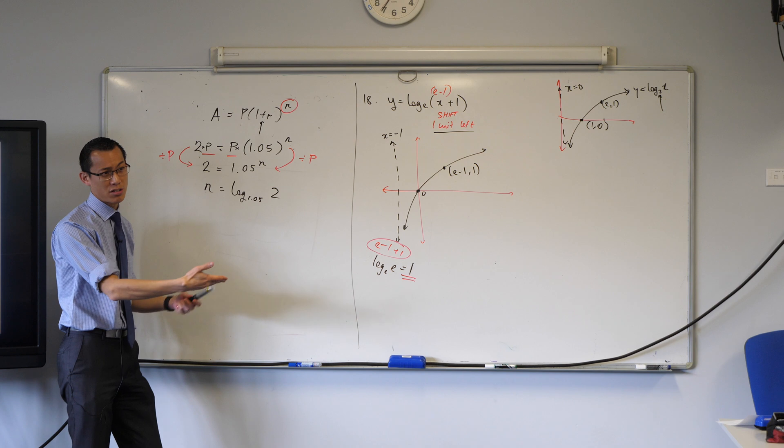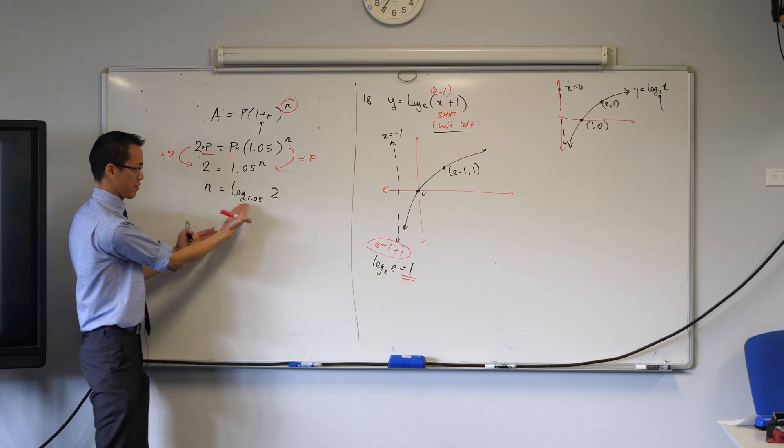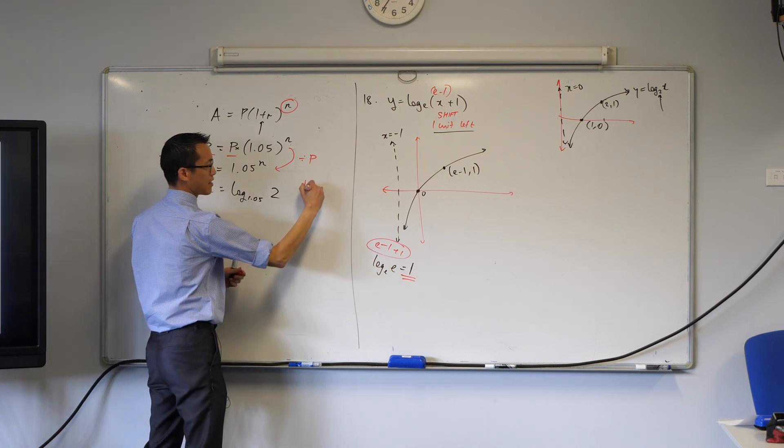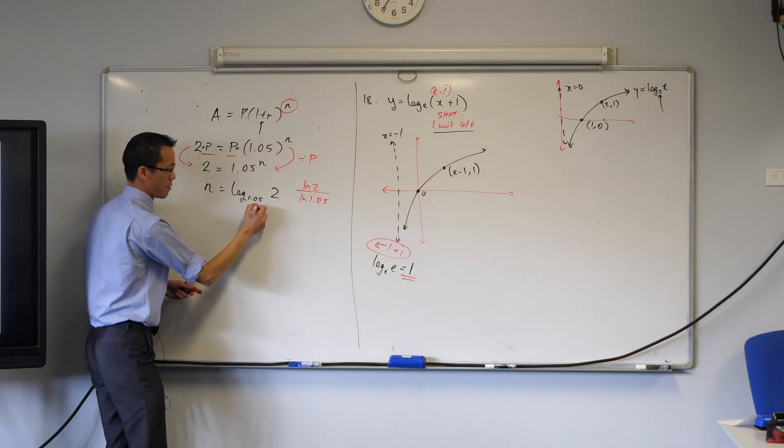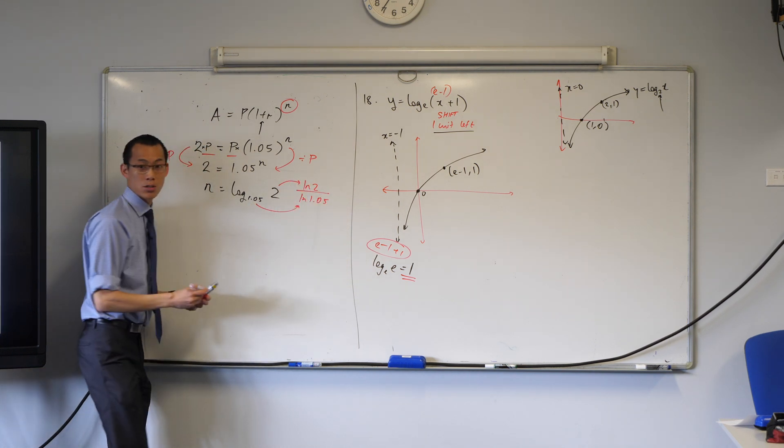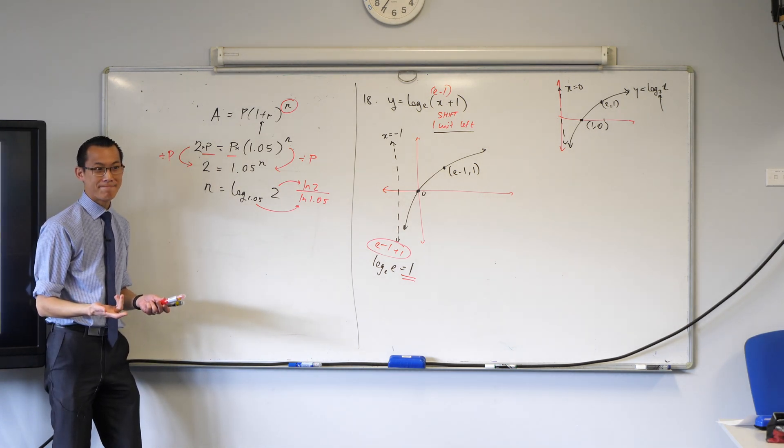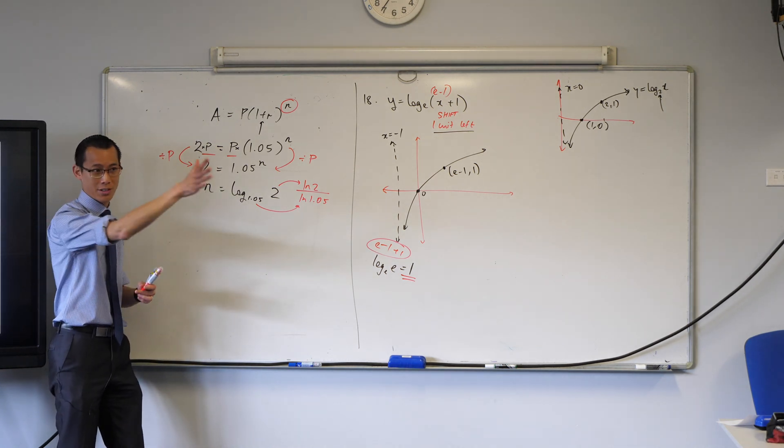Now, you need your change of base law to actually do that in your calculator because your calculator doesn't have that. So I would write that as log 2 on log 1.05. The bottom goes to the bottom. The top goes to the top. And then you get what? 14.2, all the stuff.